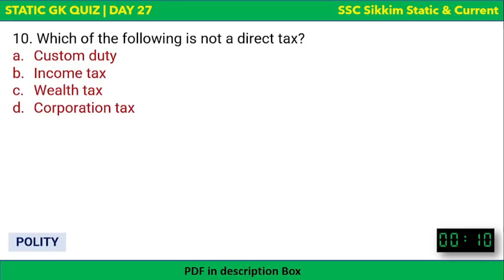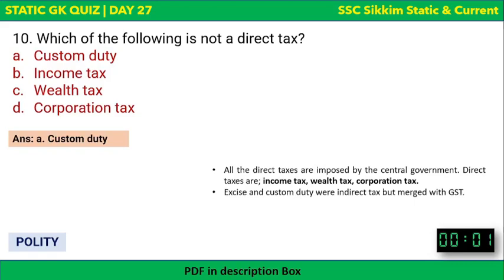Next: Which of the following is not a direct tax? There are two kinds of tax — direct and indirect. Options are custom duty, income tax, wealth tax, or corporate tax. The correct answer is custom duty — it is not a direct tax. Direct taxes include income tax, wealth tax, and corporation tax. Excise and custom duty were indirect taxes, but they are now merged with GST.